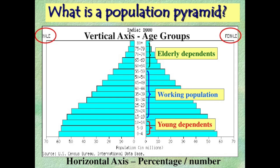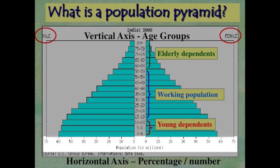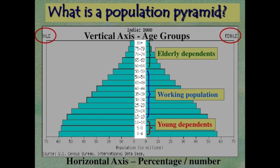Looking at it in the normal fashion, across the bottom is our population. The wider that bar, the more the population — the higher the population. Up and down the middle, we're going to see age groups. These are called cohorts. So we have a zero to four cohort, a five to nine cohort, and so on. Each bar is telling you what percent of the population is in that cohort.